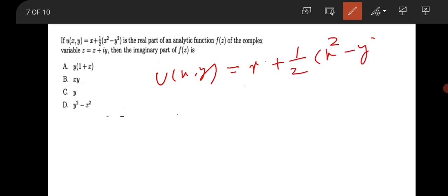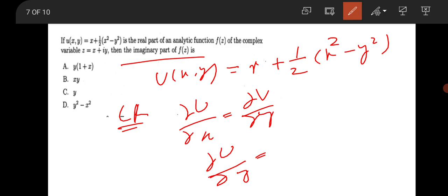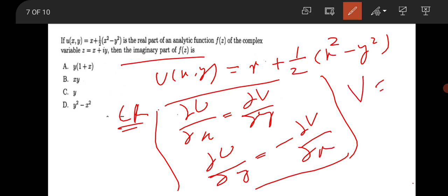Your CR condition is like ∂u/∂x equal to ∂v/∂y and your ∂u/∂y is equal to minus ∂v/∂x. Use these two formulas, you can have your imaginary part v.